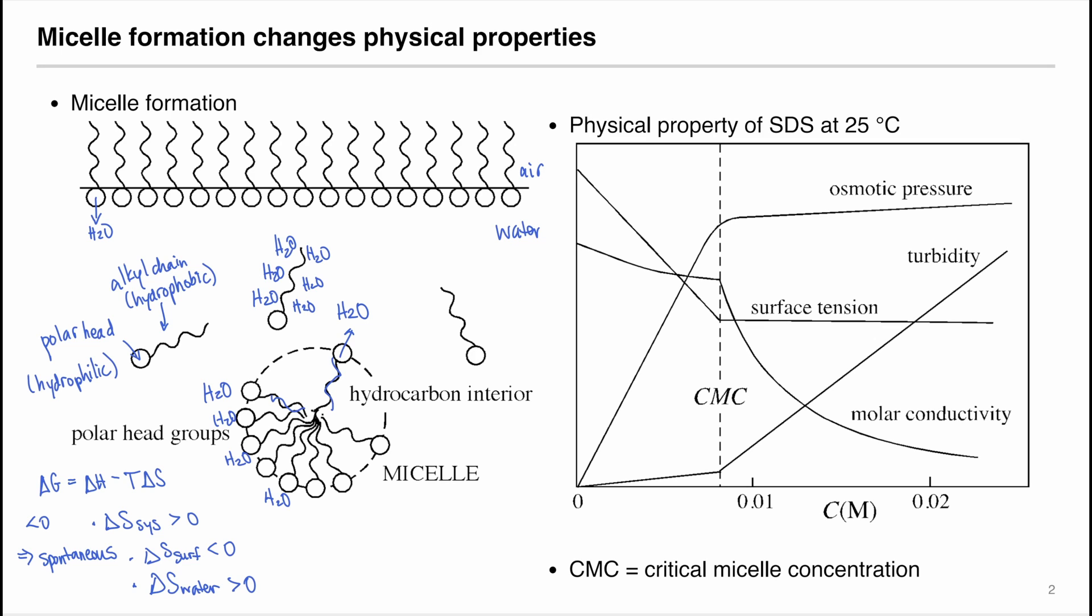The concentration at which micelles form is called the critical micelle concentration or CMC. At CMC, many physical properties change.